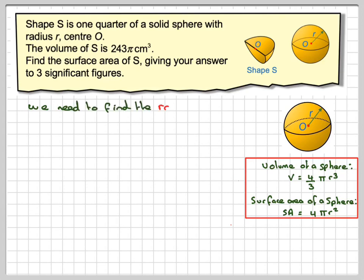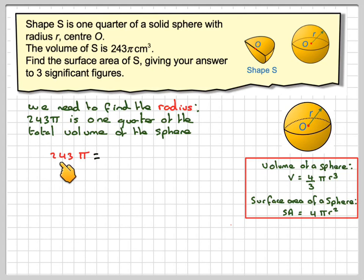So we need to find the radius, the value of this radius here, in order to answer this question. We know that 243π is one quarter of the total volume of the sphere. So we can set up an equation. The volume, 243π, is equal to one quarter of the volume of a sphere. So it's one quarter of this, we'll put that into brackets: 1/4(4/3πr³).